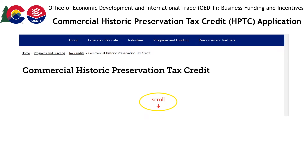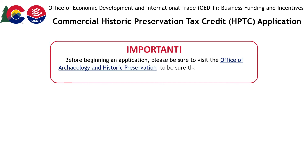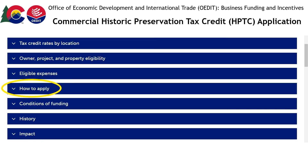Then scroll down to reveal more information about the tax credit. To apply for a Commercial Historic Preservation Tax Credit, or HPTC, it is important to first visit the Office of Archaeology and Historic Preservation webpage. There, you will find several helpful resources to make sure that this is an appropriate program for your project. A link to the site is below this video. Feel free to open it in a new window or tab so that you can easily return to the application process once you have verified your eligibility. When you have finished and are ready to continue, click the Apply bar for instructions on how to register an account with OEDIT.